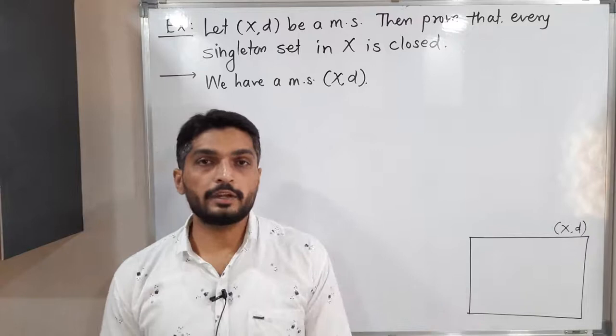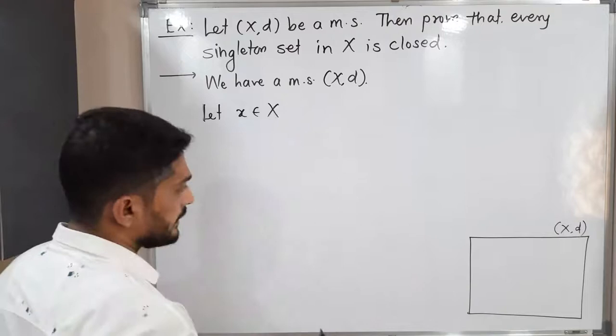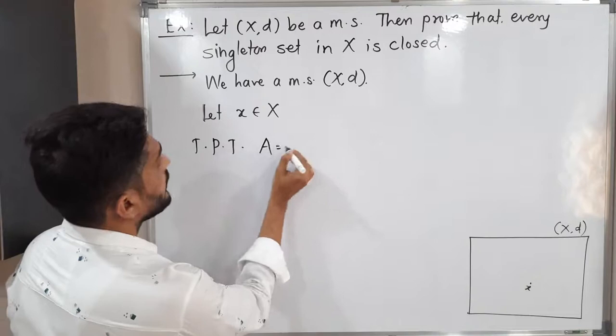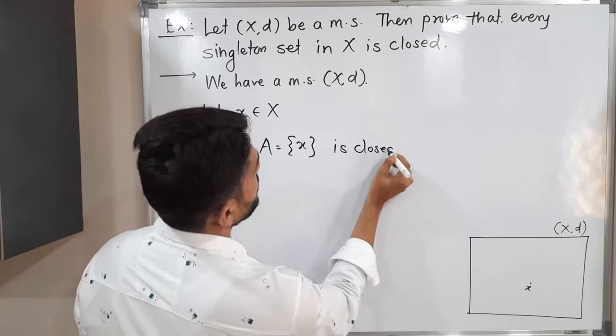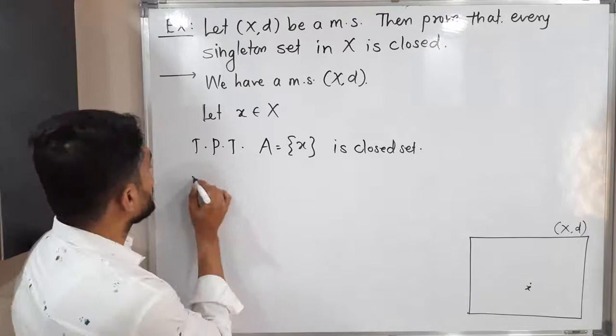So let us take any arbitrary point of X. Let x belong to capital X — this is any arbitrary point. We have to prove that the singleton set {x} is a closed set. What is the definition of a closed set? If the complement of that set is open, we say the set is closed. So we simply have to prove that its complement is open — that is, to prove that X minus A is open.